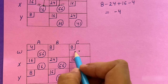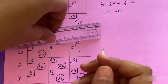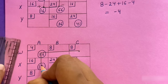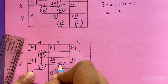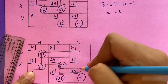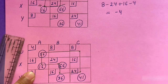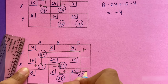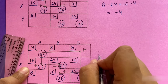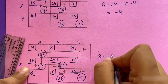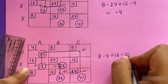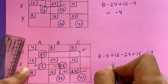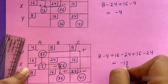For the WC cell, we trace a closed path and construct the loop. Assigning plus and minus signs alternately, the improvement index = 8 − 4 + 16 − 24 + 16 − 24 = −12.